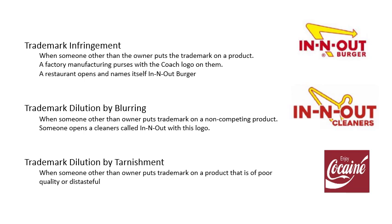There is also trademark dilution by blurring. Trademark dilution is when the worth of somebody's trademark is lessened because of somebody else's use of the trademark. In this case, the trademark value is lessened by blurring. For example, if a dry cleaner opens an "In-N-Out Cleaners" using that logo, In-N-Out Burger could sue for trademark dilution by blurring, asserting that the logo and name would confuse the consumer, thereby lessening the worth of the trademark.